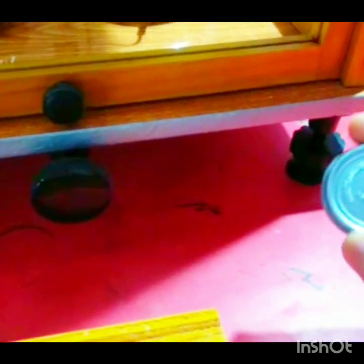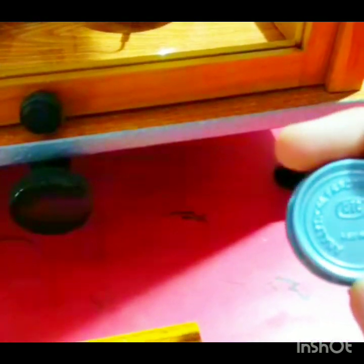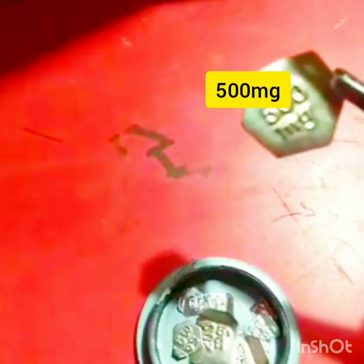Now take the weight from the standard fractional weight box. Take 500 milligrams. This is 500 milligrams. First, open the door, take the 500 milligram weight, and put it on the right side pan. Then turn it clockwise.